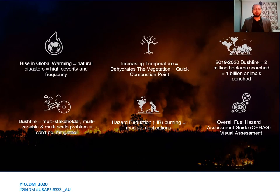The rise in global warming has induced the world's climate to change abruptly, with natural disasters occurring with high severity and high frequency. This causes loss of lives, destroys infrastructure, disturbs established environmental cycles, and affects the health, well-being, and economic well-being of residents. For example, the increasing temperature dehydrates vegetation and brings the fuel closer to its combustion form, causing severe and frequent burns.